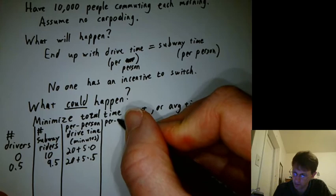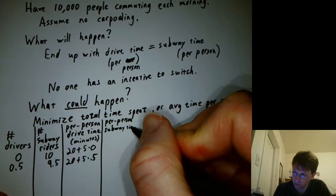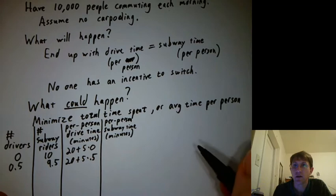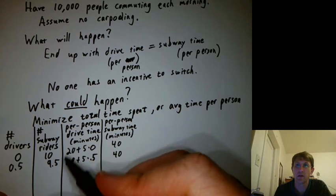How about the per person subway time, in minutes? We said let's make life easy and just assume it's always 40 minutes, no matter what, no matter how many subway riders you have.